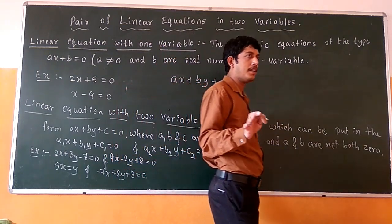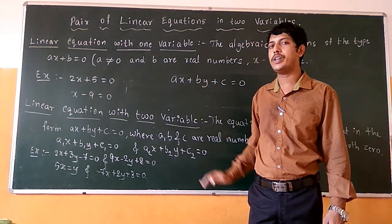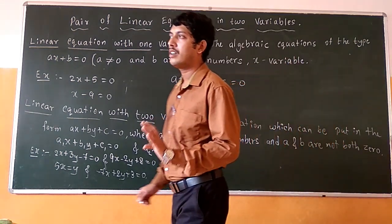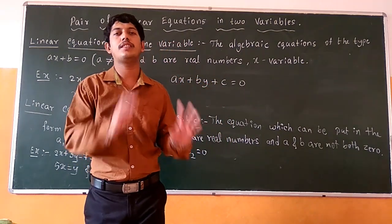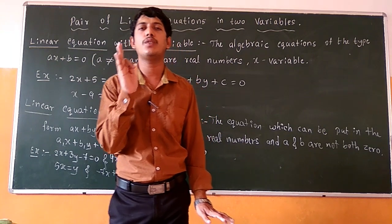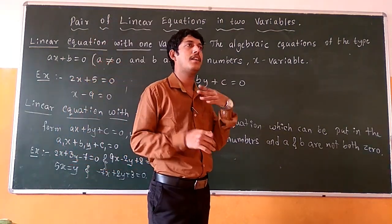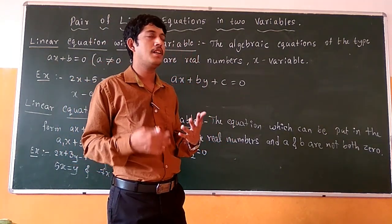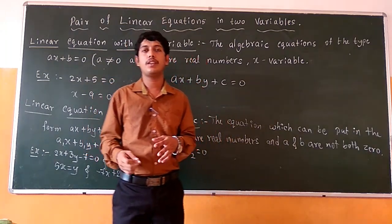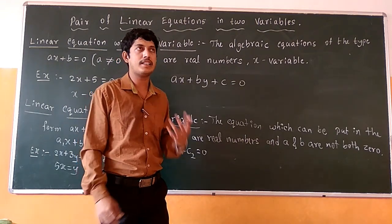This graph contains mainly three types. When we consider two equations, the first case is the graph is coincident — that means the values of x and y are the same, so they are overlapping on each other, they fall on each other.